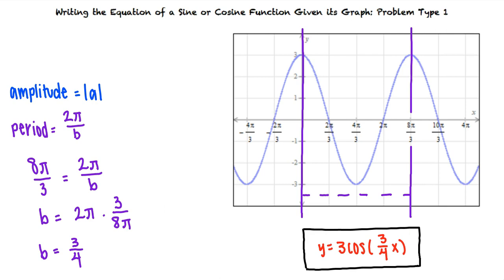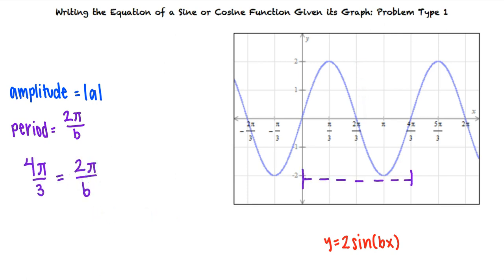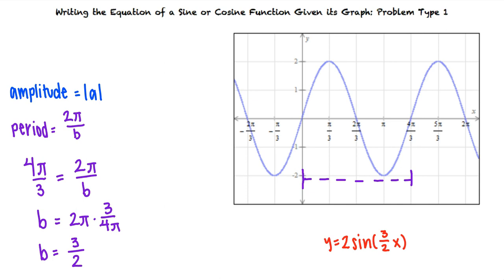Can we look at an example with sine? Here we see a sine graph. We know this graph corresponds to a sine function because it passes through the origin. We notice that the graph increases toward a relative maximum of 2, which tells us the amplitude is 2 and a equals positive 2. The period is 4 pi over 3 because the graph completes one cycle between 0 and 4 pi over 3. With this information, we can solve for b. Now that we know both our a and b values, the equation that describes the given graph is y equals 2 sine of 3-halves x.